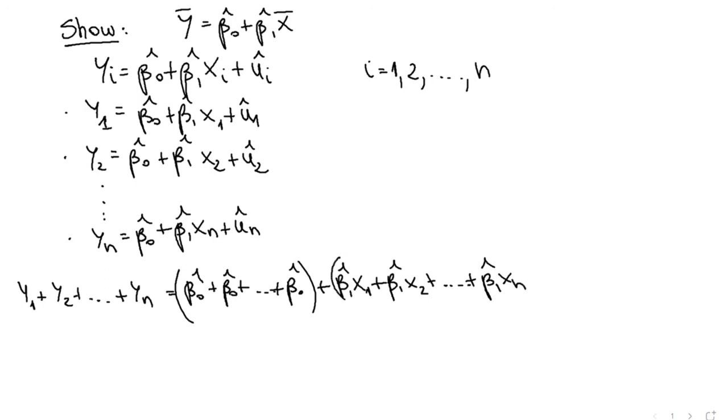And all the way up to beta 1 hat xn. Let's put another parenthesis here. And then I'm going to have plus u1 hat plus u2 hat plus all the way up to un hat. And again, let's put parenthesis here.